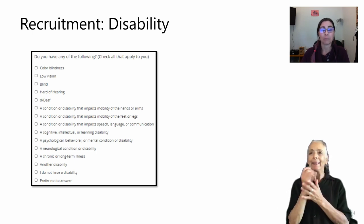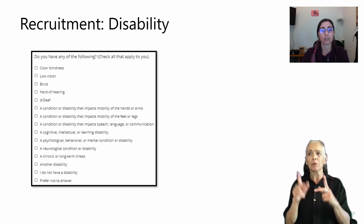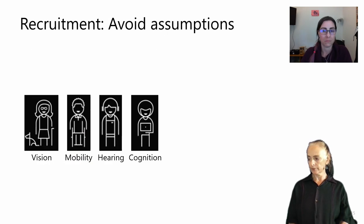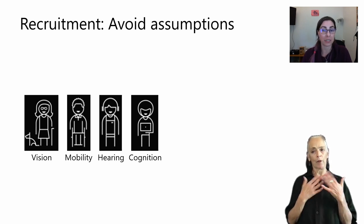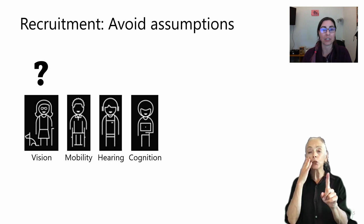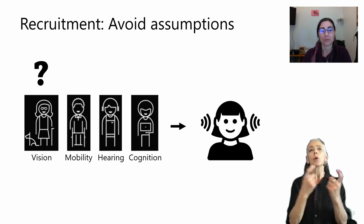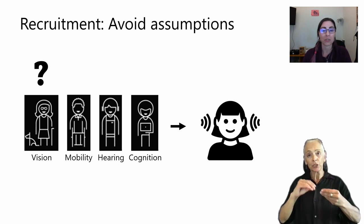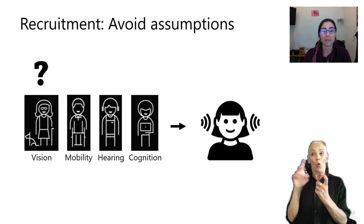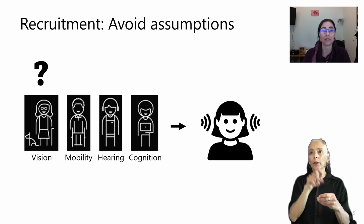Intersectionality is key. People's needs can be affected by many different factors — by their disability identity but also by their other identities. For example, we sometimes receive requests to test menu or gameplay narration with blind players specifically. However, what they really want to know is if people who rely on screen narration will be able to use and enjoy their narration feature. So instead of recruiting players who identify as blind, we recruit by asking people if they rely on screen narration for gameplay — directly targeting users of this feature rather than making assumptions about who those users might be.